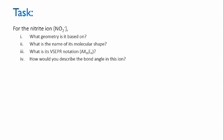I'd like you to think about the nitrite ion, NO₂⁻. Work out what geometry it's based on, and what is the name of its molecular shape once you've taken the lone pairs into account. I want you to write it in VSEPR notation, describe the bond angle in this ion, and enter the answers into the quiz.